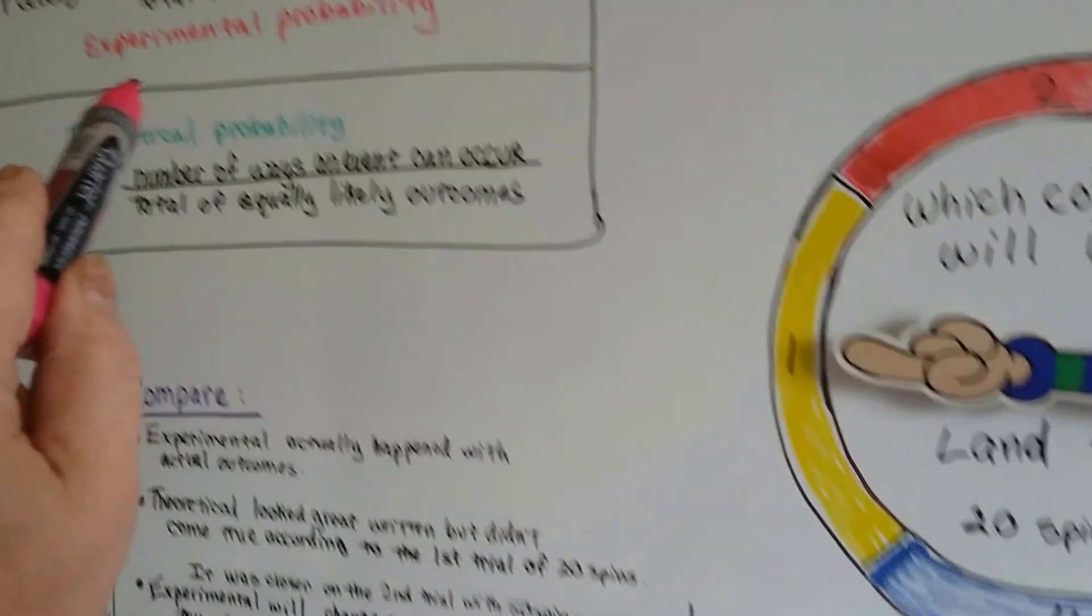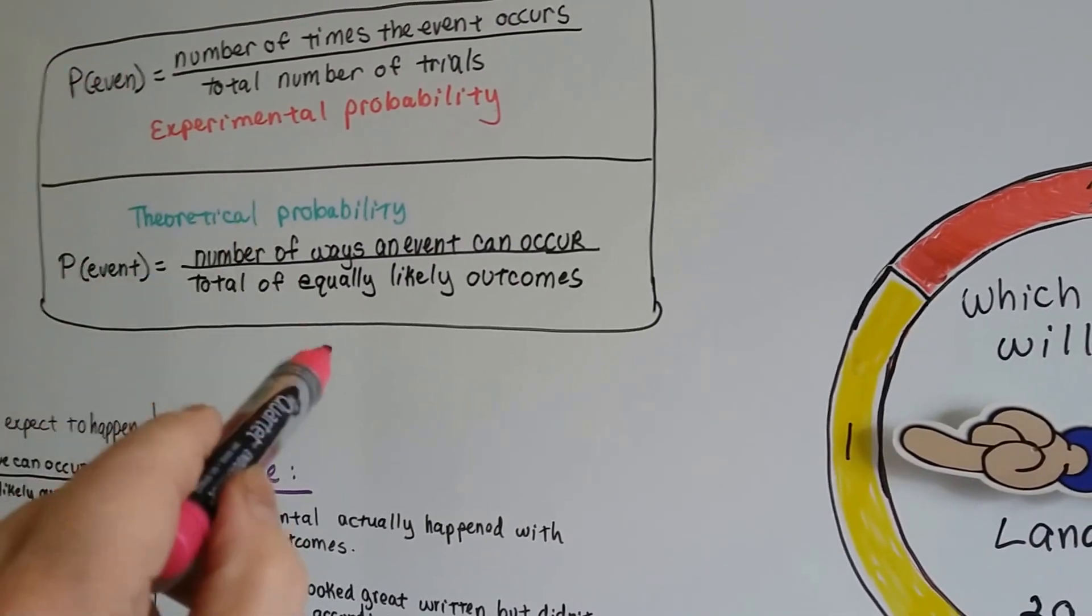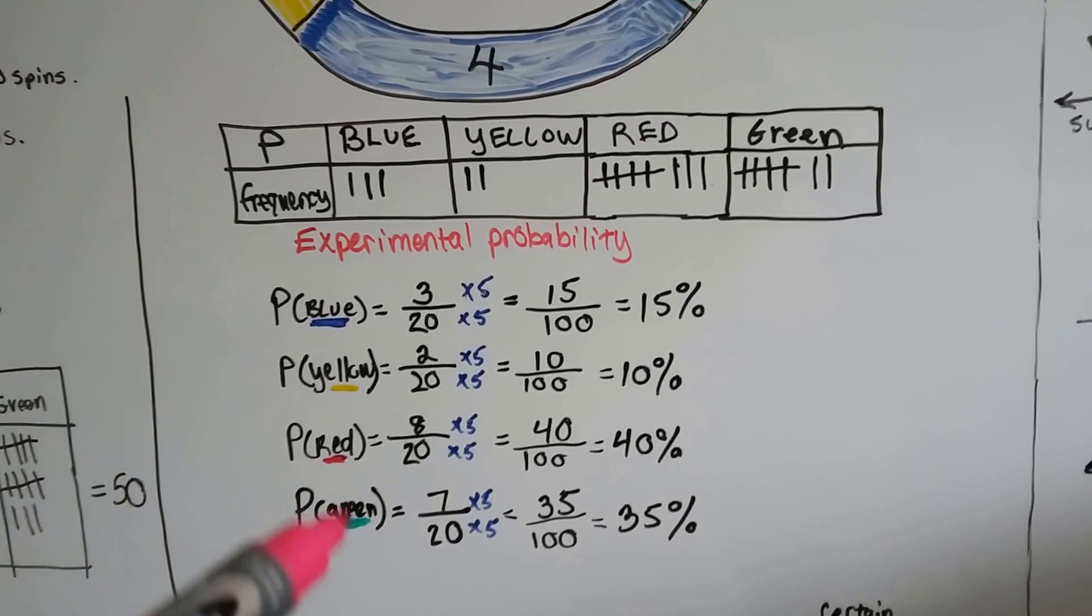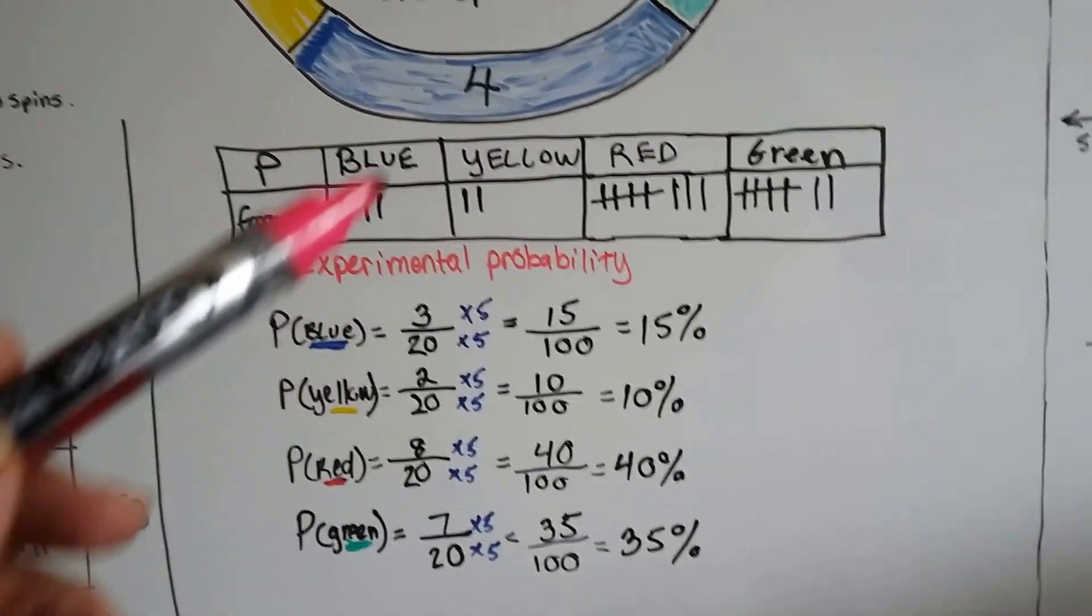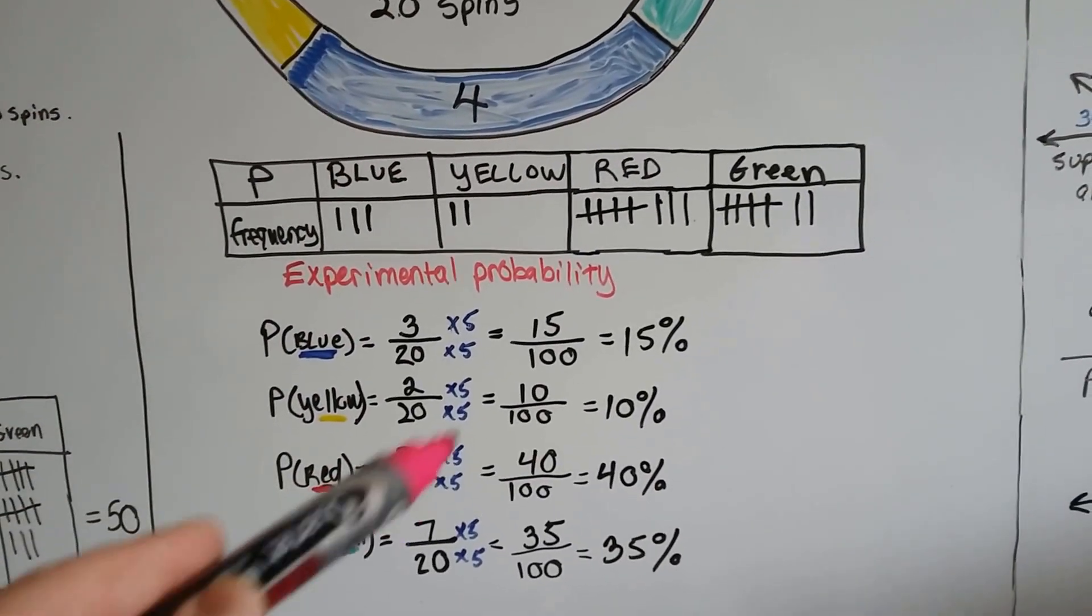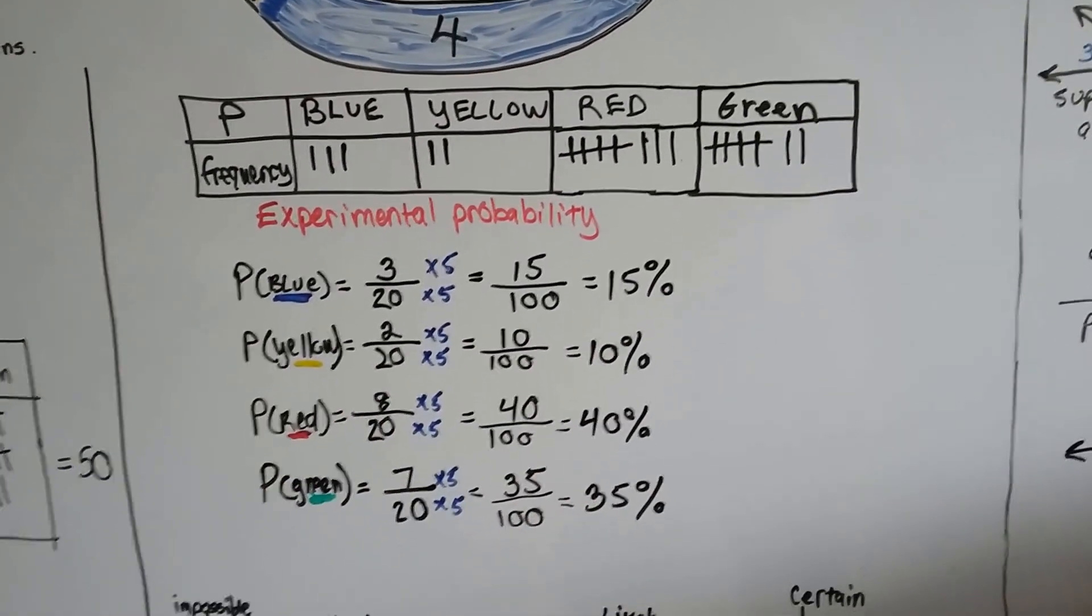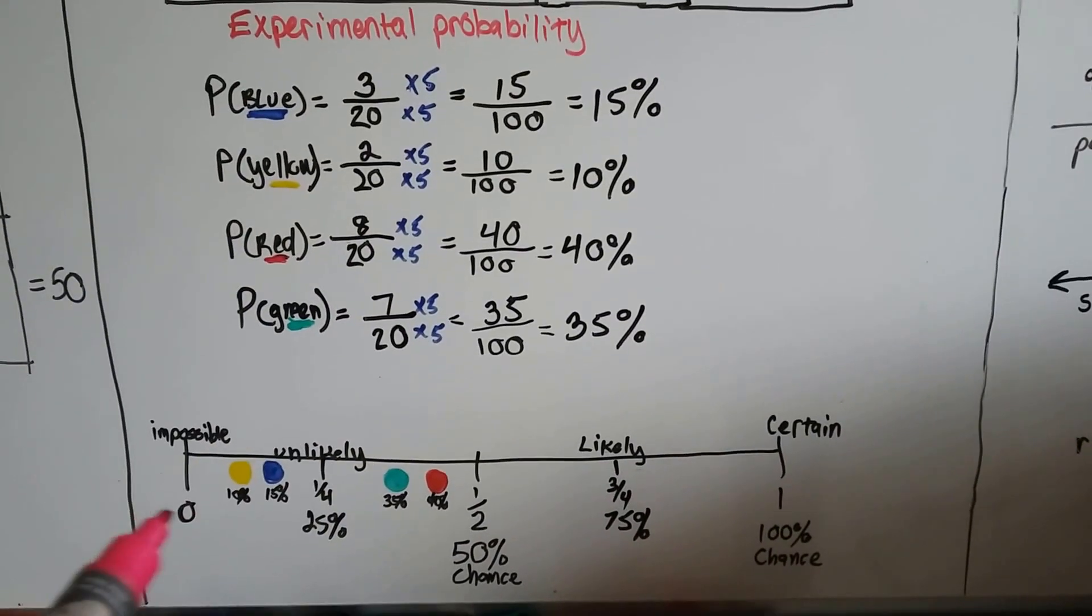So, if you saw this up here, it says P event. That's the probability of the event. Oh, I'm missing a T there. So, the event is it landing on the blue, or the yellow, or the red, or the green. And then, out of the 20 spins, I turn it into a percentage, and that's the amount of times it landed on it.